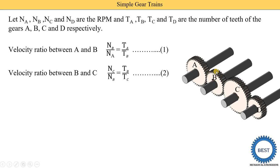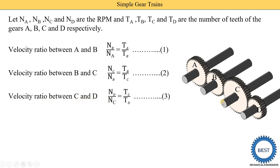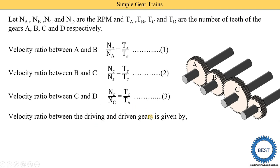Power from gear B is transferred to gear C, then from gear C to gear D. The velocity ratio between C and D is: Nd/Nc = Tc/Td. This is equation number three. The overall velocity ratio between the driving gear A and driven gear D is given by Nd/Na.